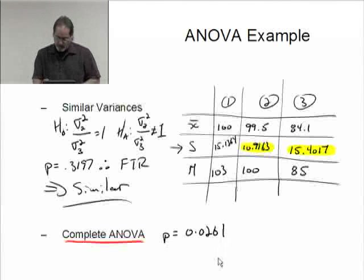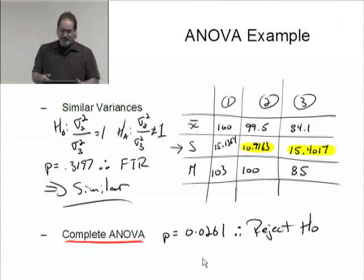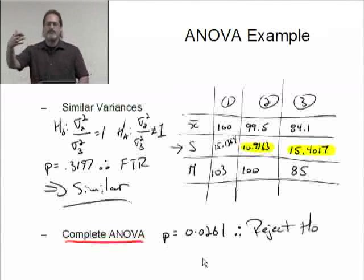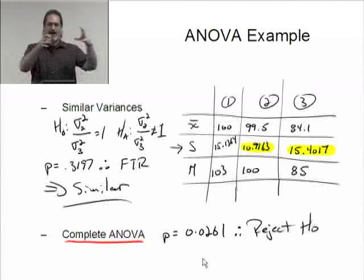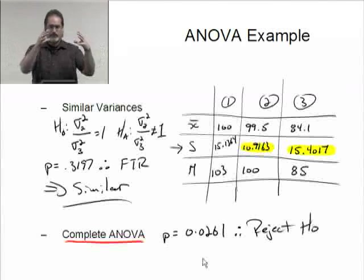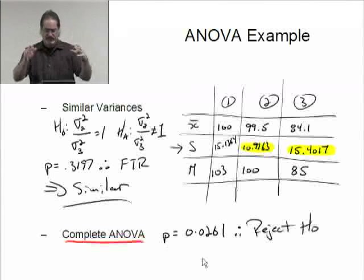So I'm going to switch back to the computer and say my p-value equals 0.0261. Therefore, my decision will be to reject the null hypothesis, which then implies that somebody is different. At least one of these groups is different from the others. It could be that all three are actually different, or it could be that two are clumped together and one of them is different.